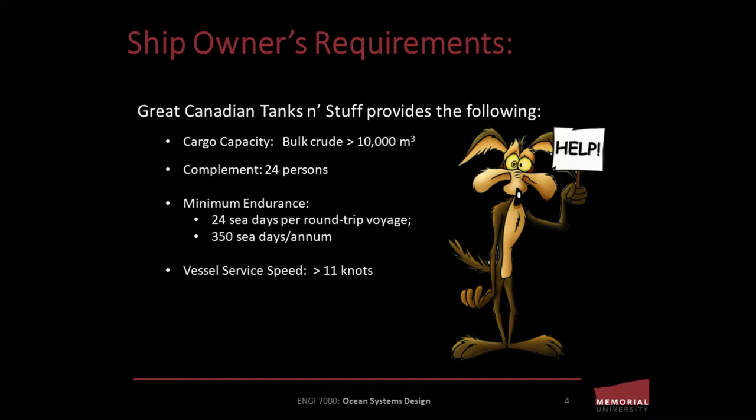Great Canadian Tanks and Stuff has provided the following minimum requirements at this stage of the process. Cargo capacity consists of bulk crude greater than 10,000 cubic meters, a complement of 24 persons, and a minimum endurance of 24 sea days per round-trip voyage for 350 sea days per annum. Additionally, they'd like a vessel service speed of greater than 11 knots.